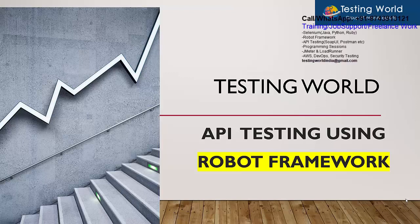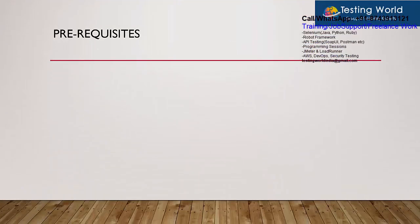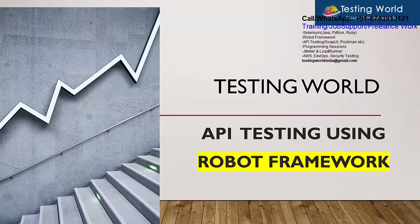Welcome to the testing world. In this session I will show you how we can do API testing using Robot Framework. As we know, Robot Framework supports different types of applications — we can automate web-based applications, we can automate APIs. Previously we already covered what Robot Framework is and how to set it up. This session is mainly about how we can automate APIs using Robot Framework, and we will cover practical steps on how we can do that.